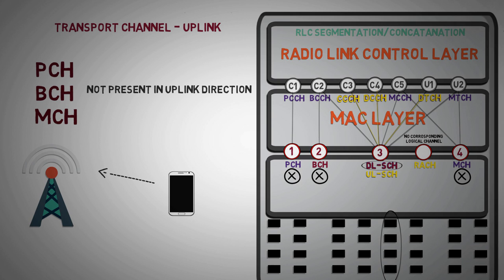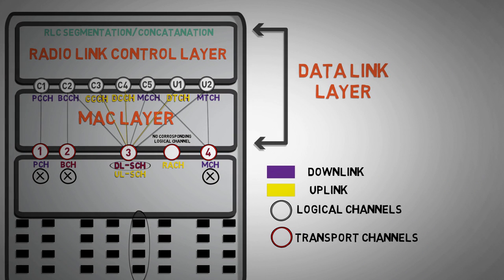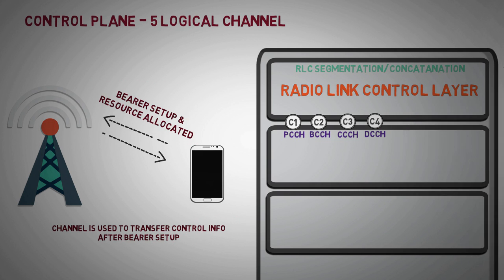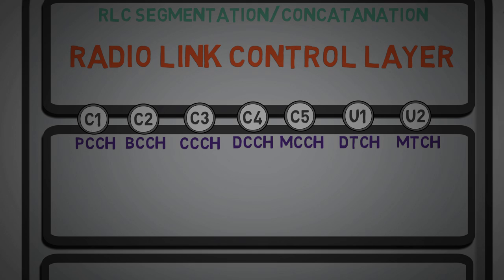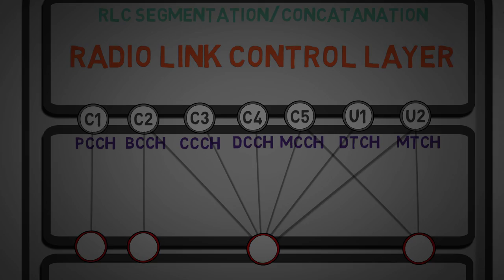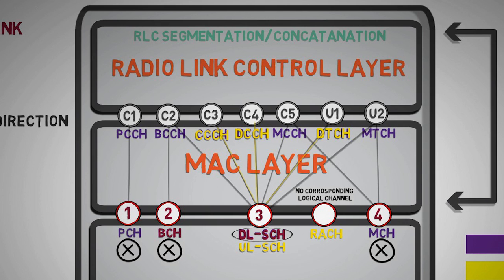What we have seen so far is, in LTE protocol stack, the logical layer, known as radio link control, segregates the data from upper layer into different groups. Then the transport layer, known as medium access control layer maps them to physical layer through transport channels. But mapping multiple logical channels in a transport channel, or simple words multiplexing the logical channel, is not the only job of MAC layer.